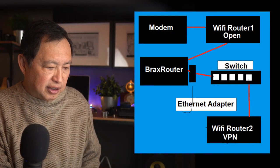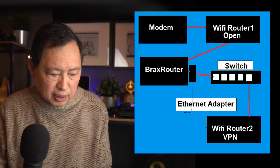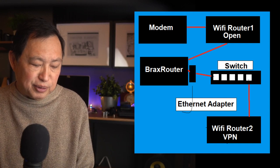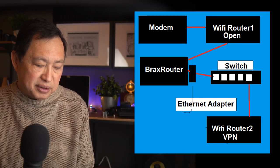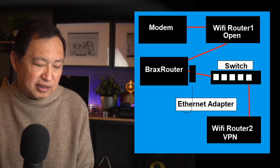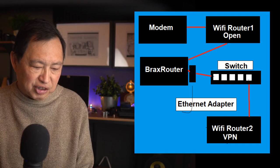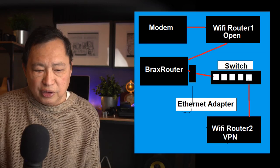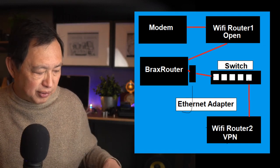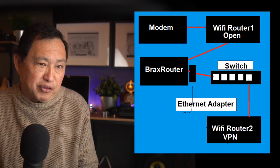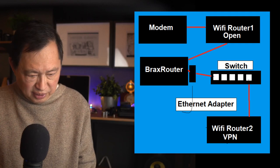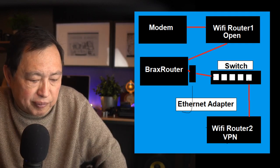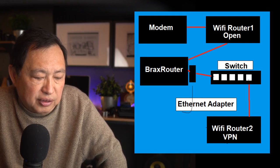Let me show you my setup on screen. The one marked 'modem' is the cable company — in my case that's Spectrum. The end result is two Wi-Fi routers.